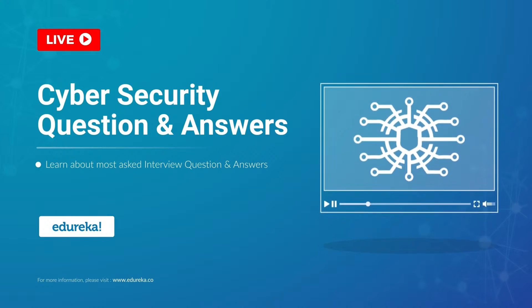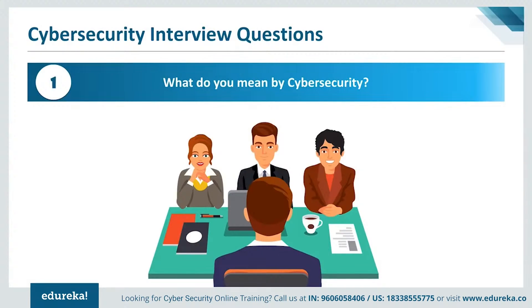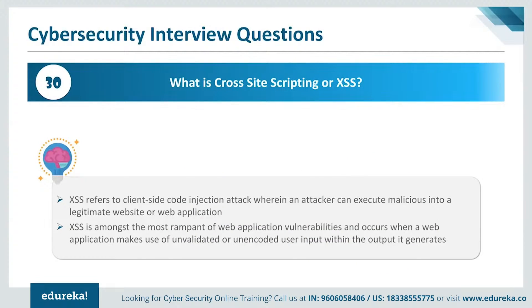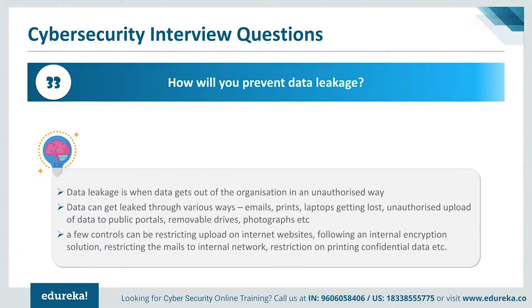So the first question is what do you mean by cyber? Data can get leaked in unauthorized ways through various means — emails, prints, laptops getting lost, unauthorized upload of data to public portals, removable drives, photographs, etc. A few controls can be restricting uploads on internet websites, following an internal encryption solution, restricting mails to internal networks, or restriction on printing confidential data.